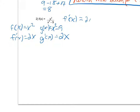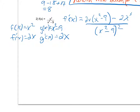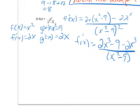Applying the quotient rule, 2x times x² gives 2x³, all over the second squared. I now have 2x³ minus 9 minus 2x³, all over (x² − 9)². The x³ terms drop out, leaving negative 9 over (x² − 9)² equals zero.